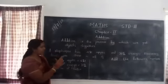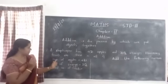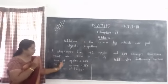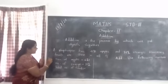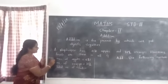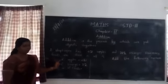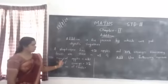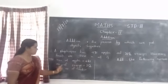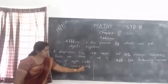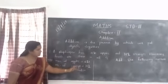This is the first method. We are going to write it in short form. Number of apples is equal to 421. Number of oranges is equal to 312. The total number of fruits is what we need to find.